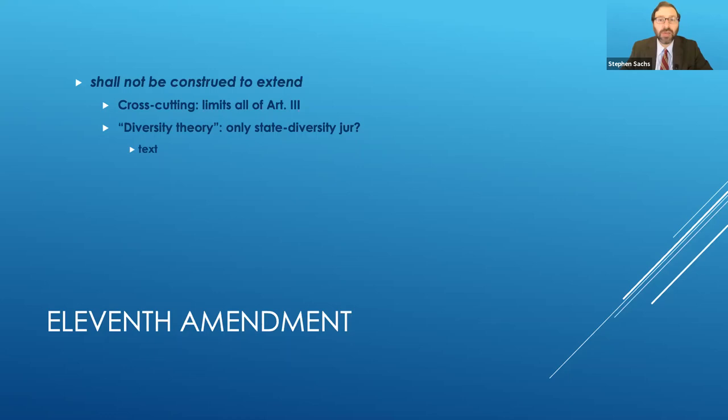We think that's not as good a reading of the text, which for one thing is a cross-cutting limit. The term shall not be construed to extend were used back then, not just to resolve interpretive confusions, but just to carve out exceptions from statutes. It also fits our theory. We think fits better with the drafting history. So Senator Gallatin, while this was being drafted, wanted to introduce an amendment to say that the 11th amendment wouldn't apply in treaty cases. That suggests that without his amendment, it would have applied in treaty cases, even though those are federal question cases.